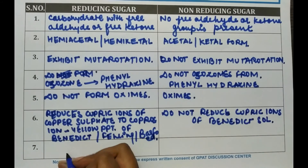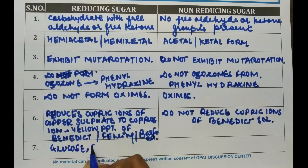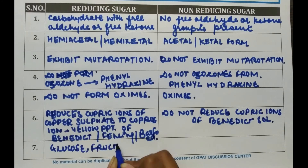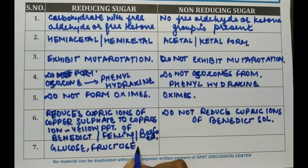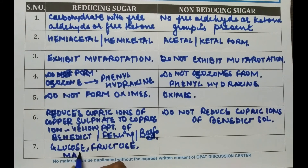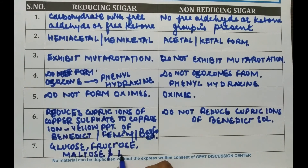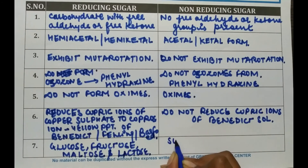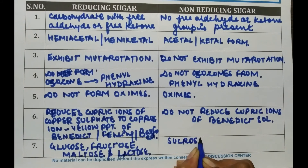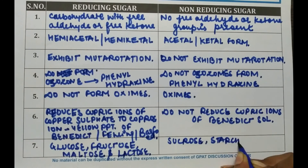Examples of reducing sugars are glucose, fructose, maltose, and lactose. And examples of non-reducing sugars are sucrose, starch, and trehalose.